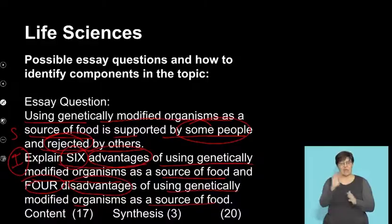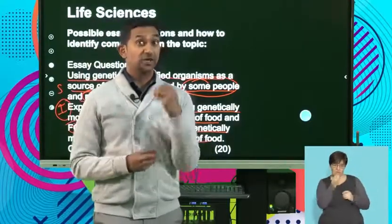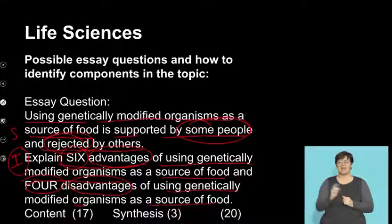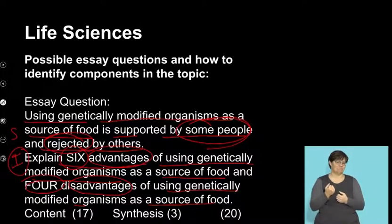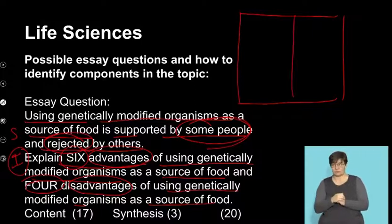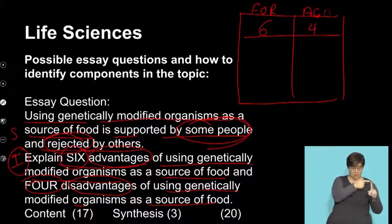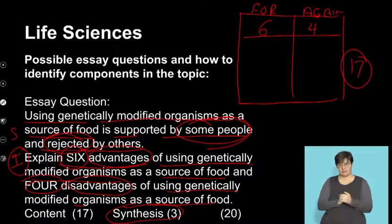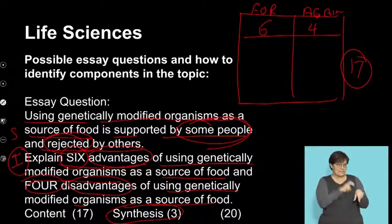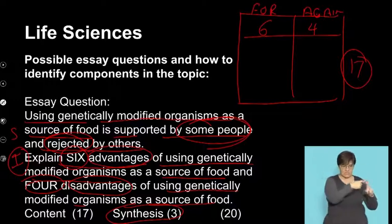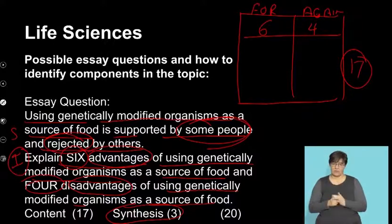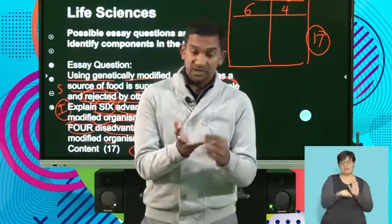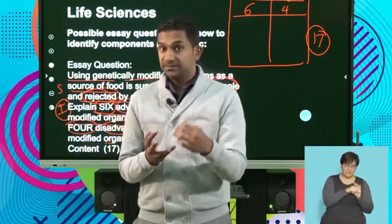When we unpack this essay, the context of genetically modified food is a controversial concept. This essay says some individuals support them and others are against them. You've got to give six facts that are for, and four facts that are against the use. Remember that this is a 17-mark essay and you've got to have the synthesis concept in your planning. It's important to string together six supporting facts and four opposing facts, requiring a thorough understanding of the pros and cons of genetically modified food.